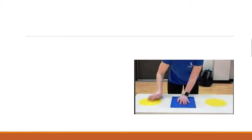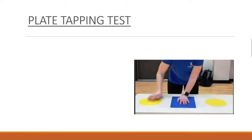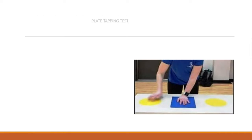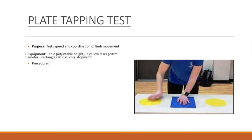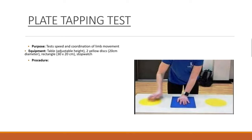Plate Tapping Test. Purpose: Test speed and coordination of limb movement. Equipment: Table with adjustable height, two yellow discs 20 centimeters in diameter, a rectangle 30 by 20 centimeters, stopwatch.